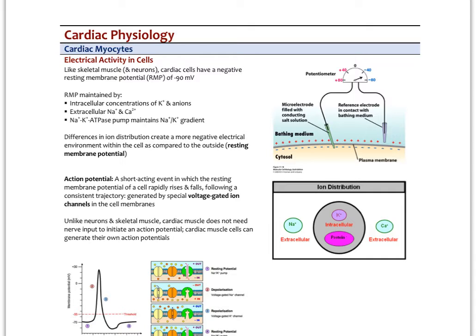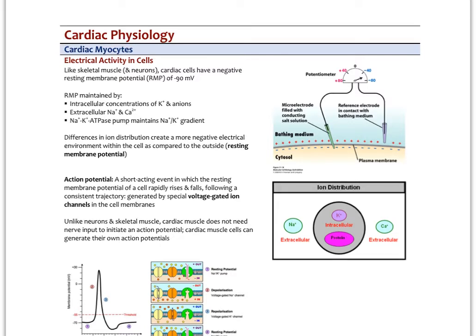All cells at rest have a resting membrane potential. If you were to stick a voltmeter with one probe on the inside of the cell membrane and the other on the outside, you'd see a slight negative charge. Most cells are somewhere around minus 70, minus 80, or minus 90 millivolts. Cardiac muscle cells are around minus 90 millivolts at rest. That's maintained by the sodium-potassium ATPase pump, which requires ATP as an energy source, and by the extracellular concentrations of potassium and sodium. The sodium-potassium ATPase pumps out three sodium ions and brings in two potassium ions, creating a slight negative charge on the inside of the membrane.